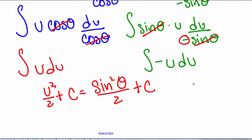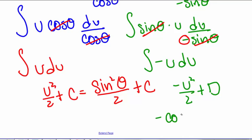So we have the integral of negative u du. Integrating negative u du, we get negative u squared divided by 2 plus a constant — we'll call this constant d. So remember that u is cosine of theta, so we have negative cosine squared of theta divided by 2 plus a constant d.